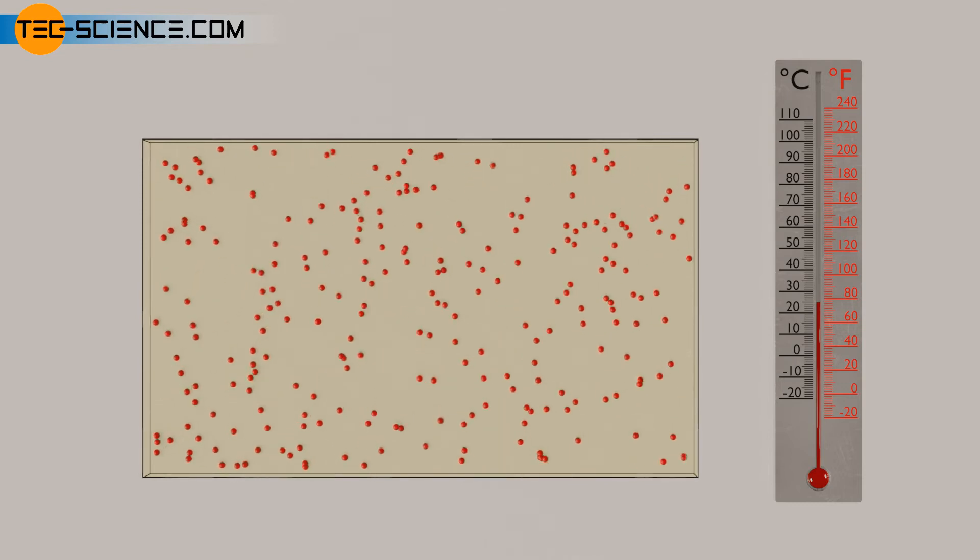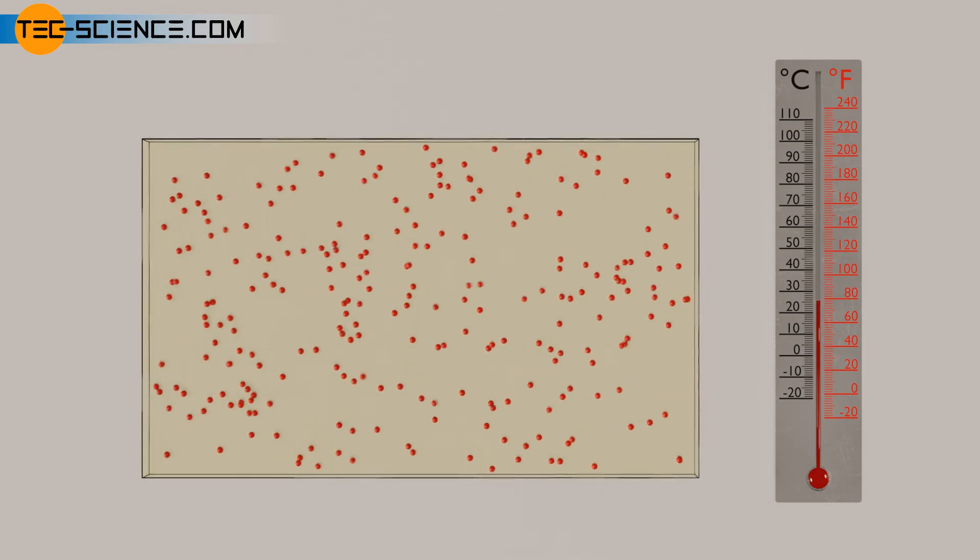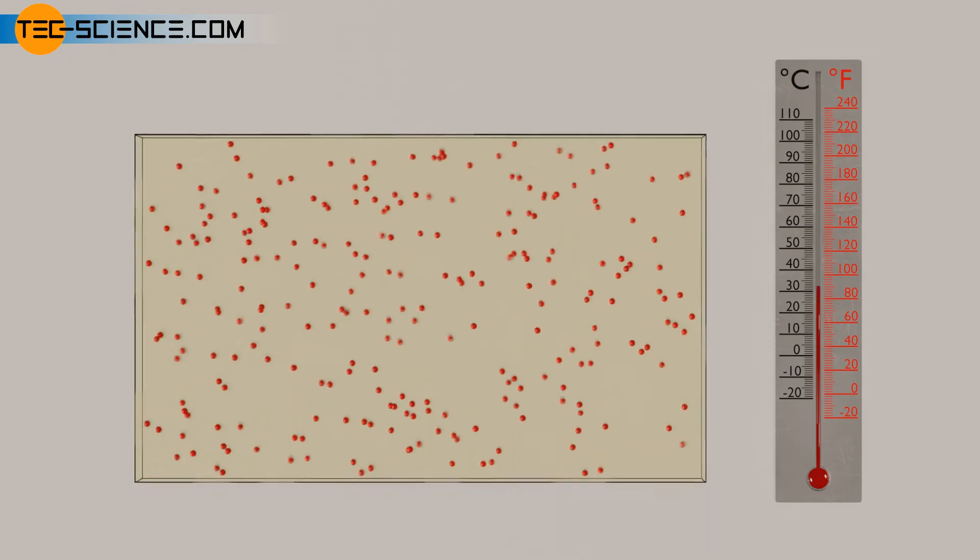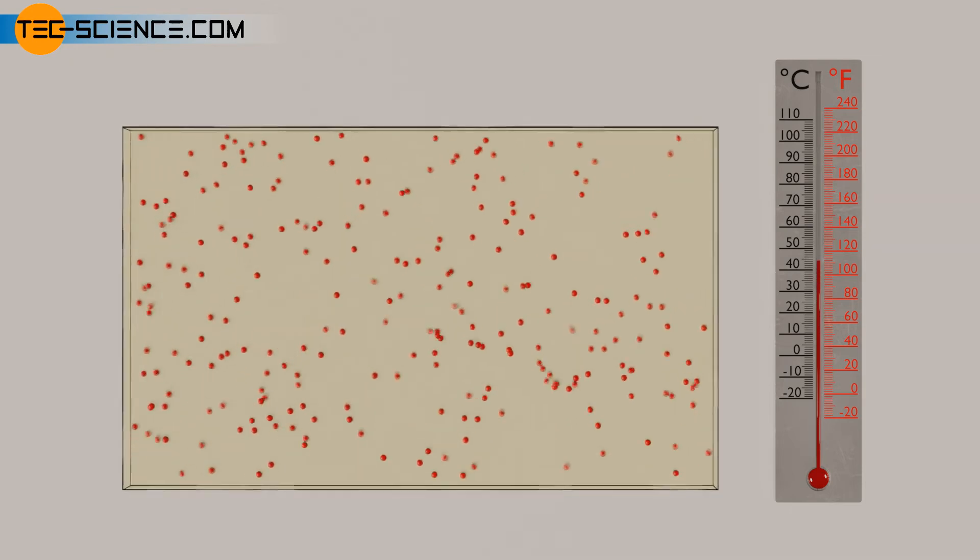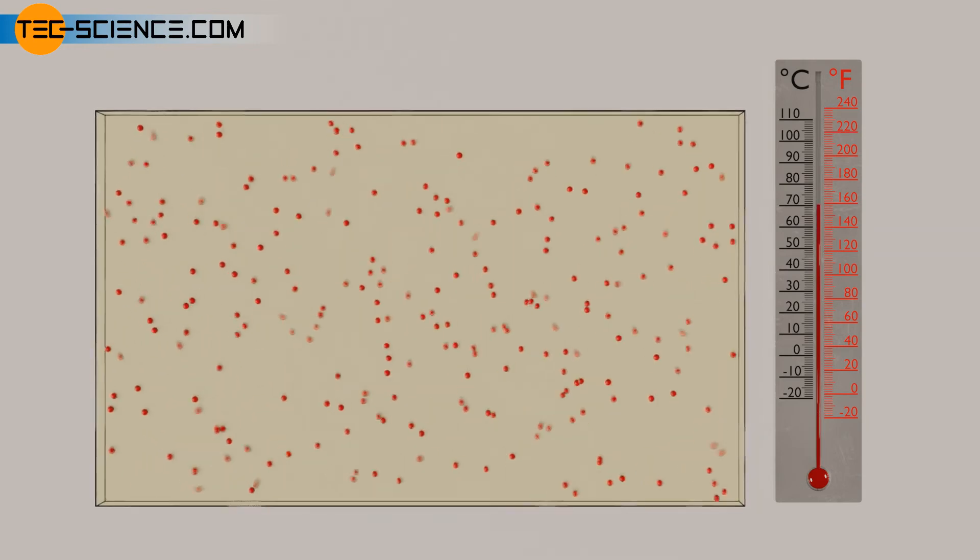A so-called thermometric liquid in a glass tube, also called capillary tube, expands when heated and contracts when cooled. A calibrated scale can then be used to read off the respective temperature that led to the corresponding thermal expansion.